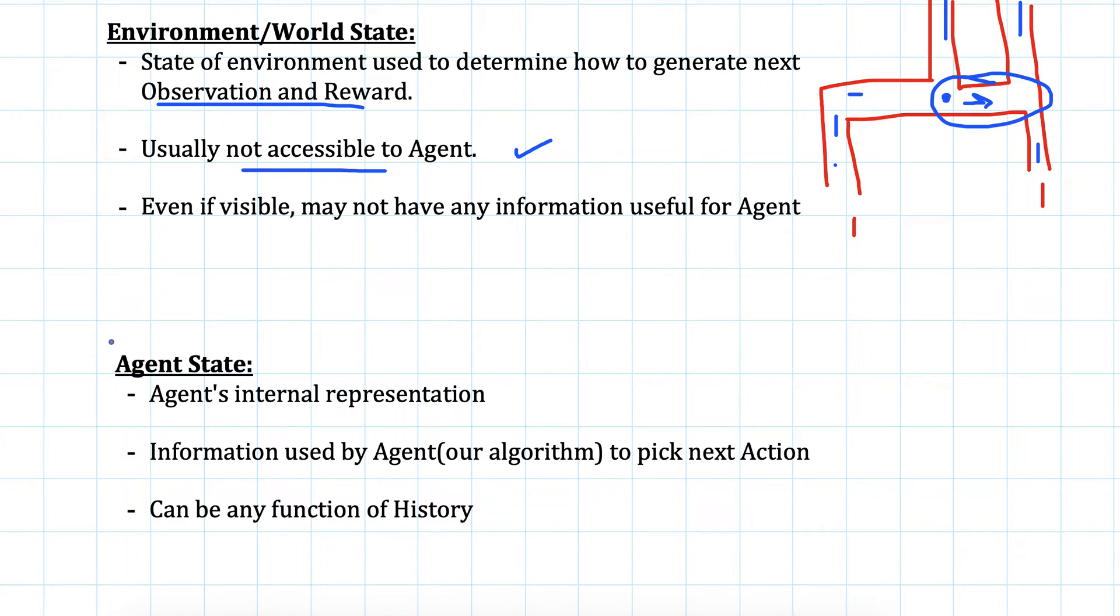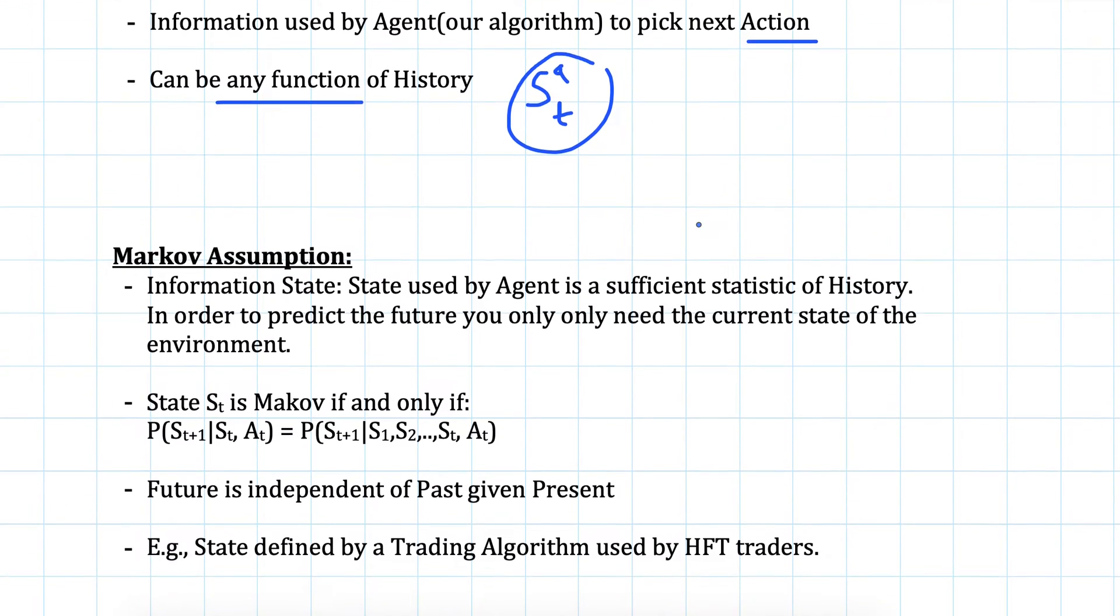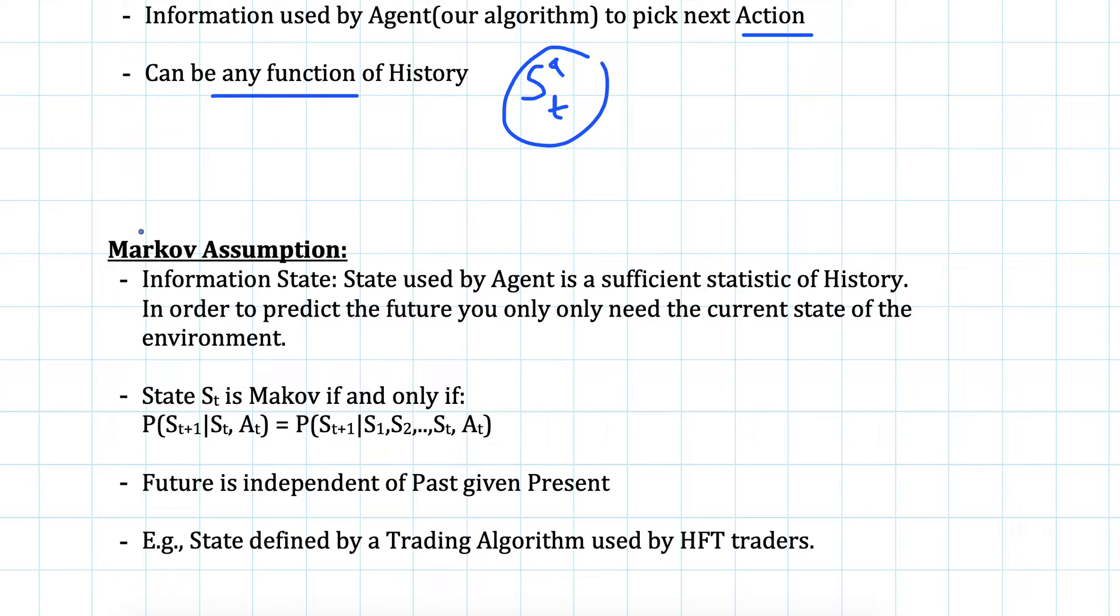We have the notion of agent state also. This state will directly impact our algorithm that is used by our agent. It will contain the internal representation of the agent or our algorithm. This is the information used by agent to pick its next action and it can be any function of history.